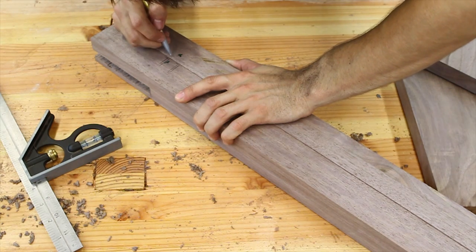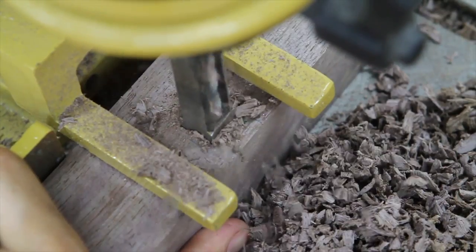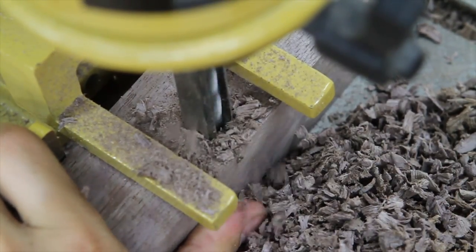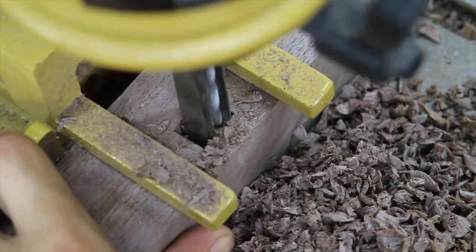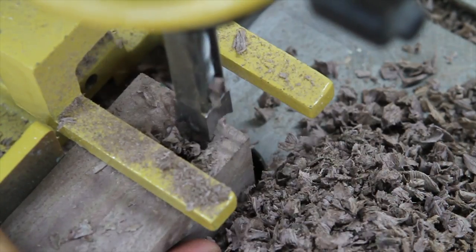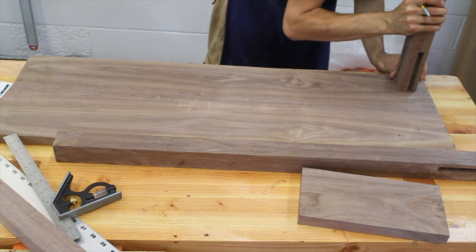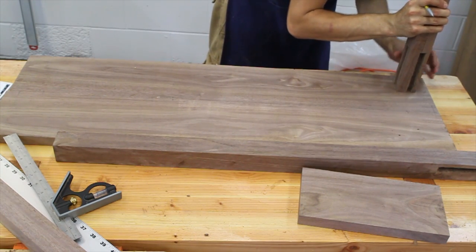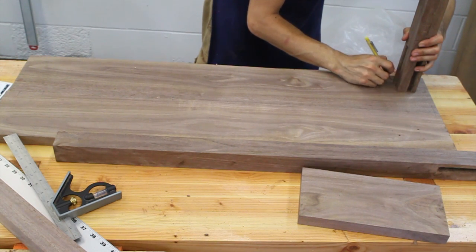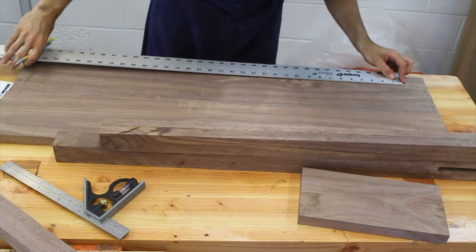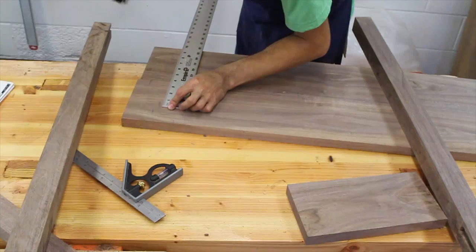Next, I'll figure out the locations of the mortises for the front rails and cut those with the mortiser as well. At this point, the aprons have been cut to final length. Now that I have the size of the top, I can place the legs directly onto the top with the overhang I want and trace around them. Then I can use a ruler to measure the apron lengths directly off the top.